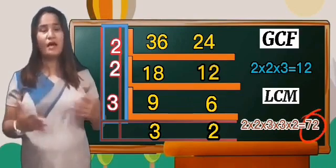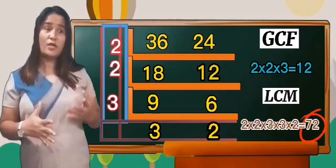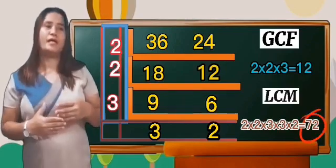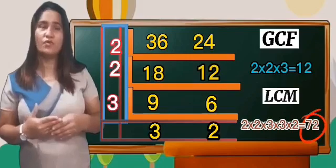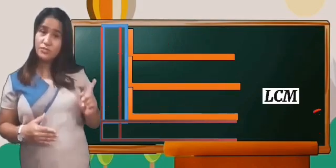And that is how we can find the LCM of 36 and 24, and that is 72. Now we already know how to find the GCF and LCM using the continuous division method.